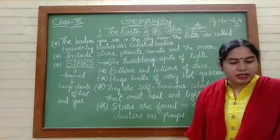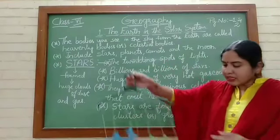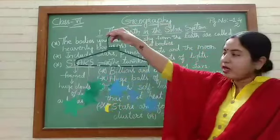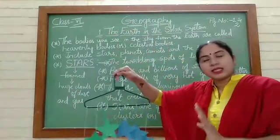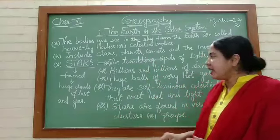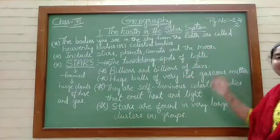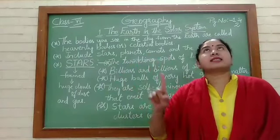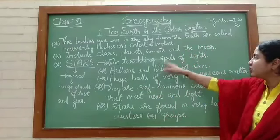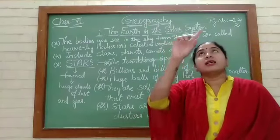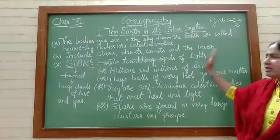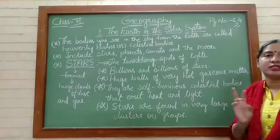Now let's come to the stars. Today's topic is we are going to learn about the stars. These are the stars and the moon, which you can see in the sky only during the night time. The twinkling spots of light which you can see in the sky at night time are called stars. Very small spots which are twinkling in the sky at night time are called stars.